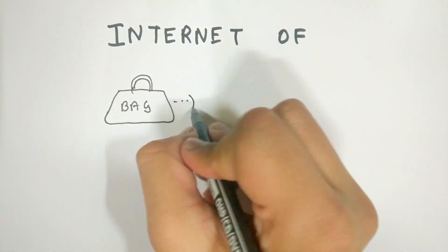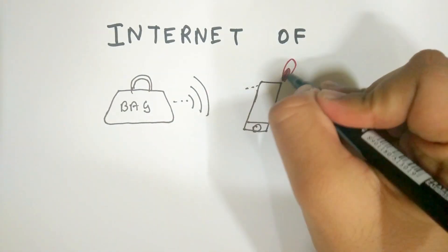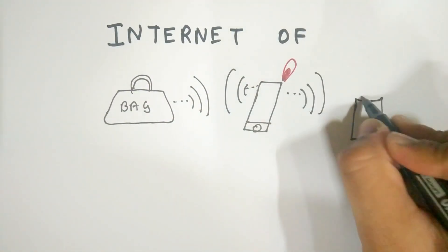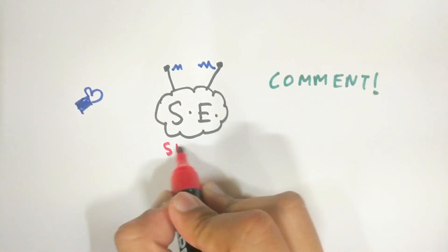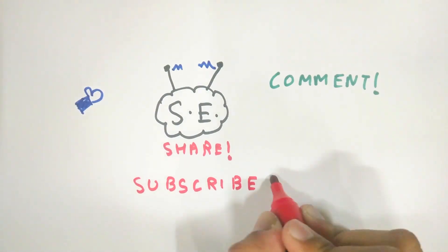The Internet of Things is an expansion of the concept of the internet. It is several years old and will soon become a part of our daily lives. If you learned something new, give this video a like, comment down below what you'd like to see next, and subscribe for some more awesome science.